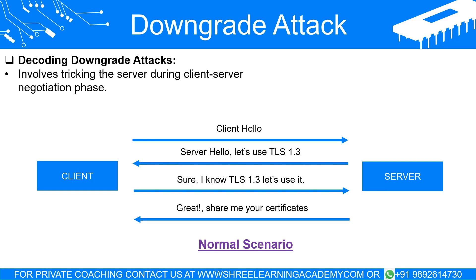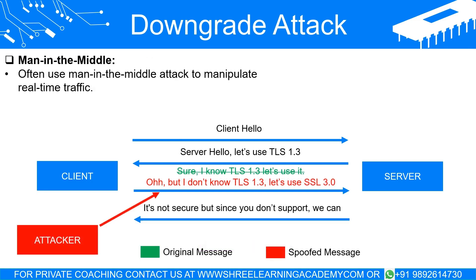However, to accommodate older systems that might not understand these new languages, both client and server often also support older, less secure forms of encryption. In a downgrade attack, an attacker intercepts the initial handshake or negotiation phase between the client and server. They trick the server into believing the client can only speak an older, more vulnerable encryption language, resulting in the server downgrading its encryption level. The attacker can now exploit the vulnerabilities in the older encryption method to intercept, read, or even manipulate the conversation between the client and server.